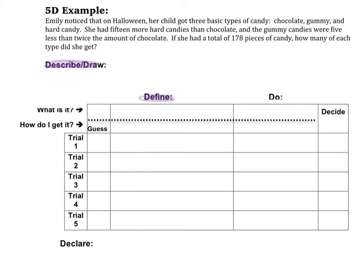Then I'm going to define. Whatever items are in the problem that I don't know, I need to define those things. I'm going to do something, depending on what the problem says to do, and then decide if my final answer is correct. Last, we have to declare, and that's when I'm going to write the final answer in a sentence.